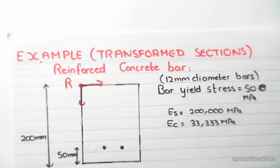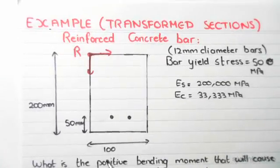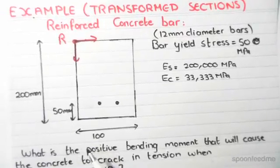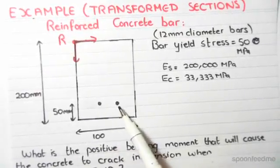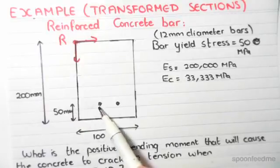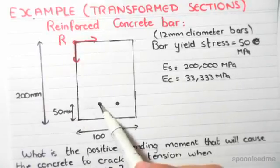It has a width of 100 millimeters. Right, so a depth of 200 and a width of 100. We have two reinforced concrete bars 50 millimeters from the bottom, so from the center of the circle to the bottom there's 50 millimeters.